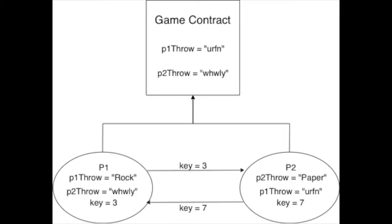In this next step, because each player knows that their opponent has committed to their answer without revealing what it is, they trade the keys for their caesar cipher. Player 1 gives their key — the value 3 — to player 2, and player 2 gives their key — the value 7 — to player 1. With these keys, they can now decipher the answers that they have recorded from the game contract.